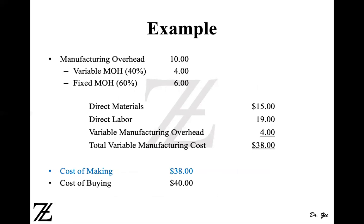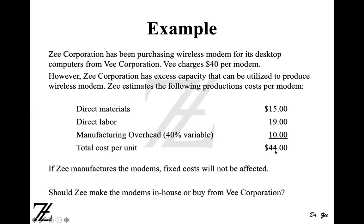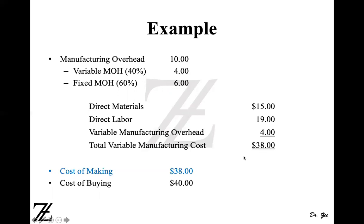The manufacturing overhead variable portion is $4 out of $10, and the fixed portion is $6. We only consider the $4 variable portion. So: direct materials $15, direct labor $19, variable manufacturing overhead $4 — that comes to $38 variable manufacturing cost total. The $6 fixed manufacturing overhead will be incurred regardless. So producing in-house costs $38, which is less than the $40 cost of buying from V Corporation. Therefore, the decision is to make the product in-house.